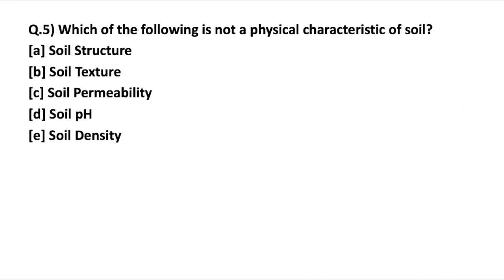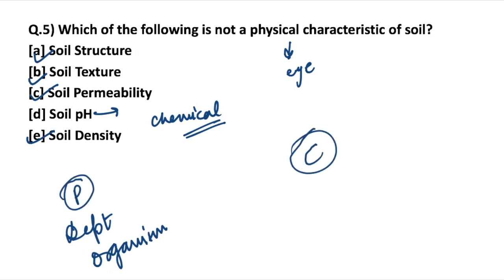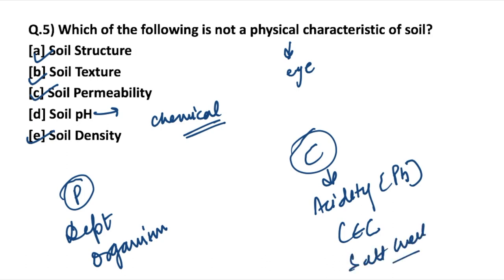Which of the following is not a physical characteristic of soil? Physical characteristics are things we can feel or see with the naked eye. Soil structure, texture, permeability, and density can be observed. Soil pH level cannot be determined by just seeing the soil — it is a chemical property. Other physical characteristics include depth of soil and organisms present in the soil. Chemical characteristics include acidity (pH), cation exchange capacity, salt level, and nutrients present.